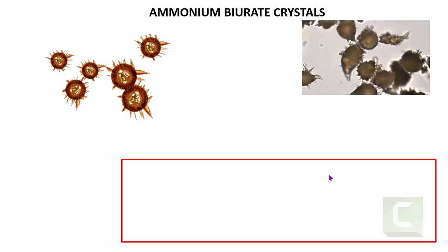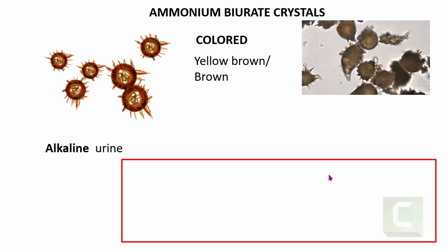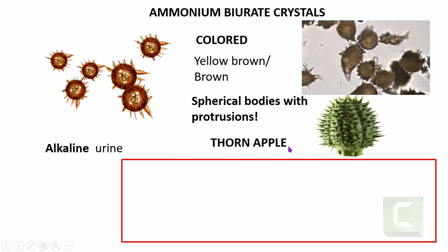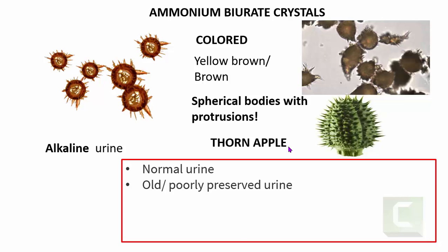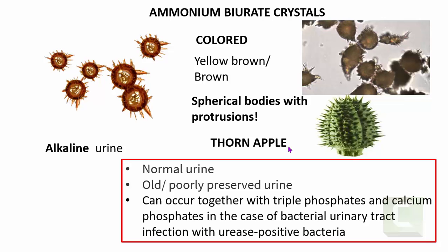The next crystals are ammonium biurate crystals — very beautiful colored crystals found in alkaline urine, yellow-brown or brown in color. Their morphology is spherical bodies with protrusions, resembling a thorn apple. Remember: thorn apple shape means ammonium biurate crystals. They can be seen in normal urine, indicating an old or poorly preserved sample. However, they can also be pathological — found together with triple phosphate and calcium phosphate in bacterial urinary tract infections, particularly with urease-positive bacteria.